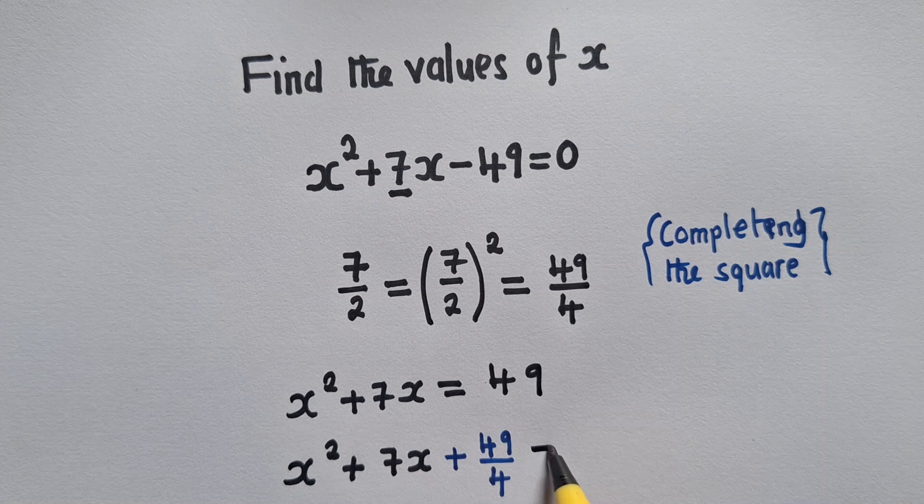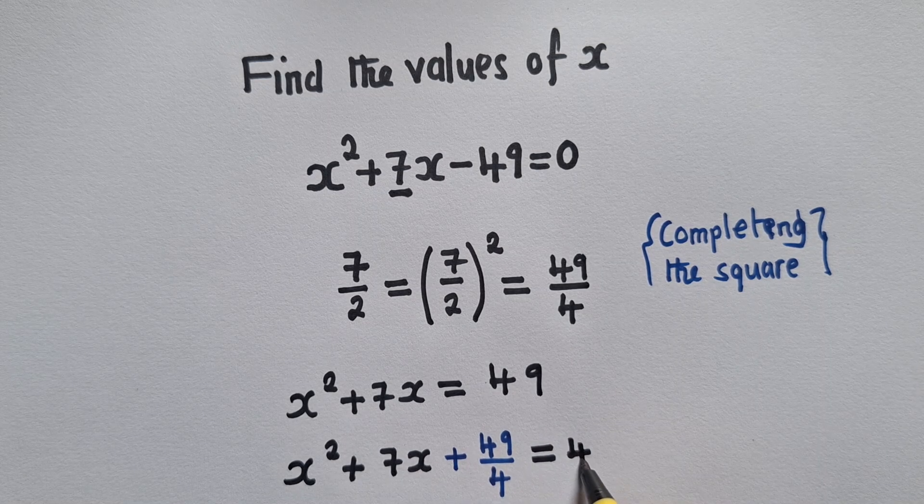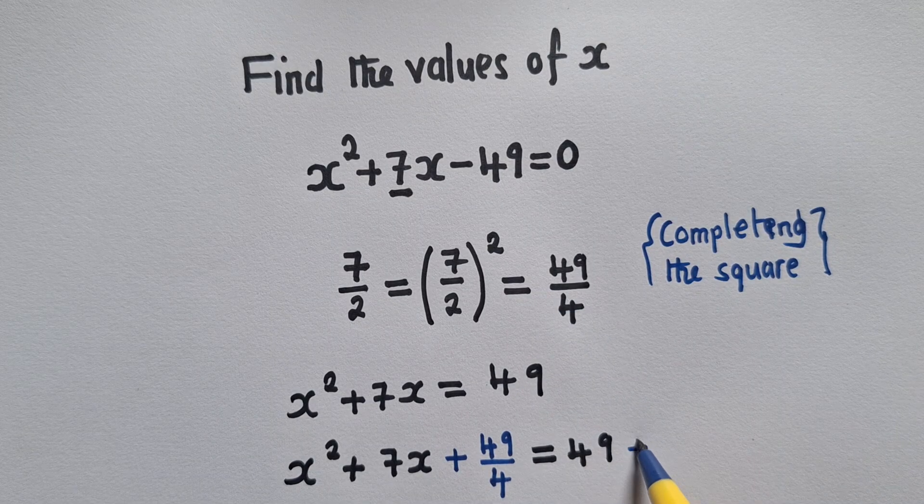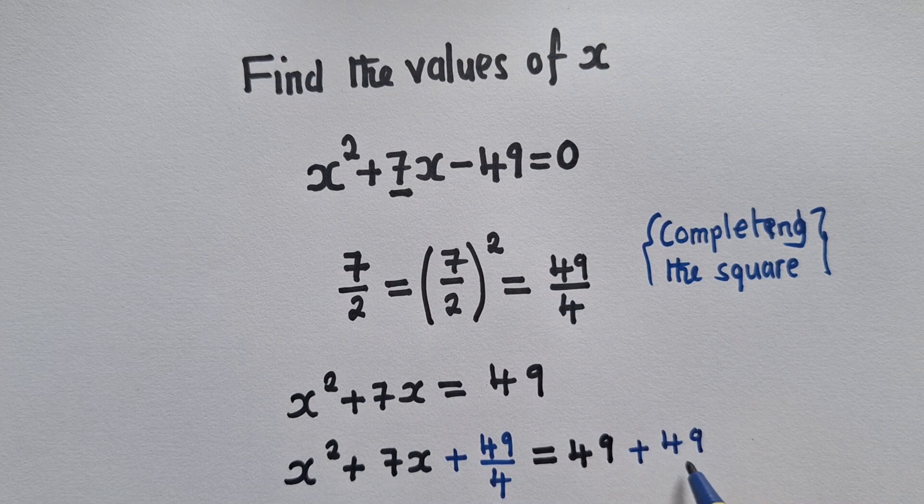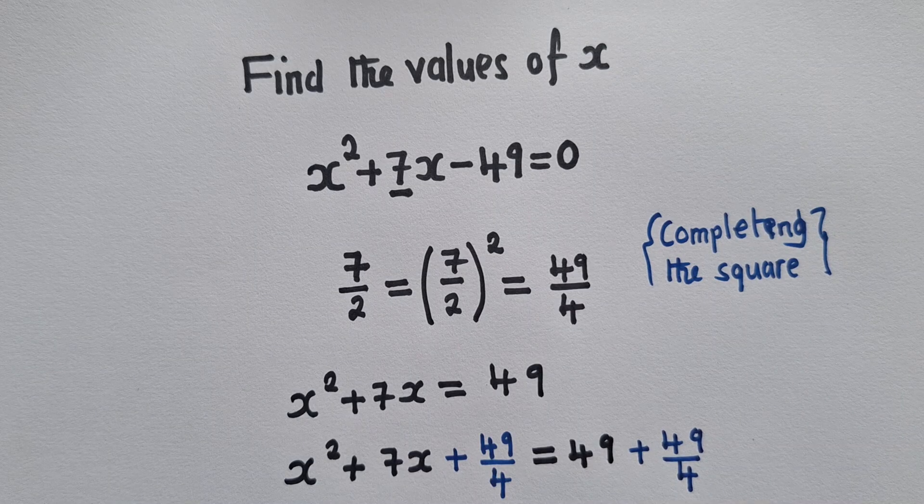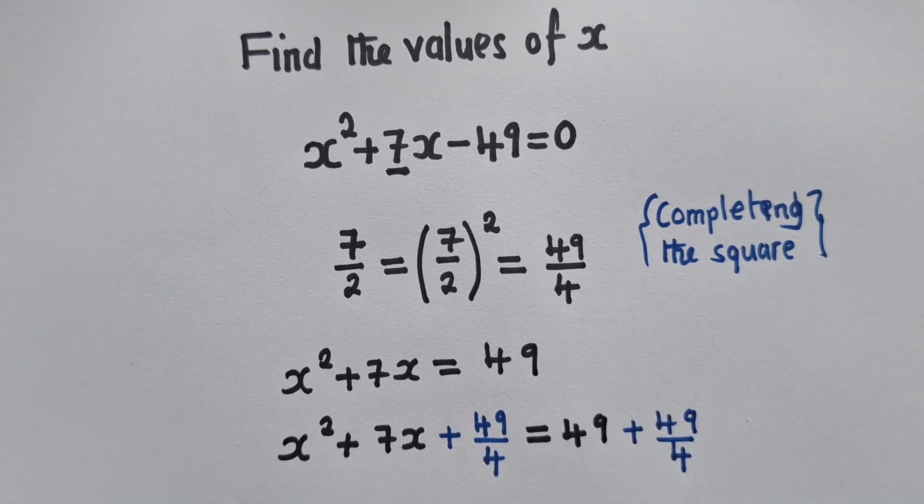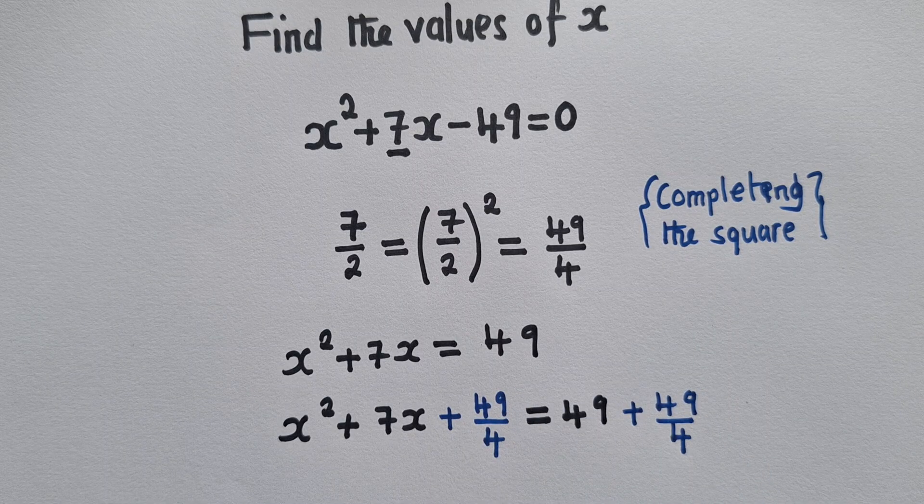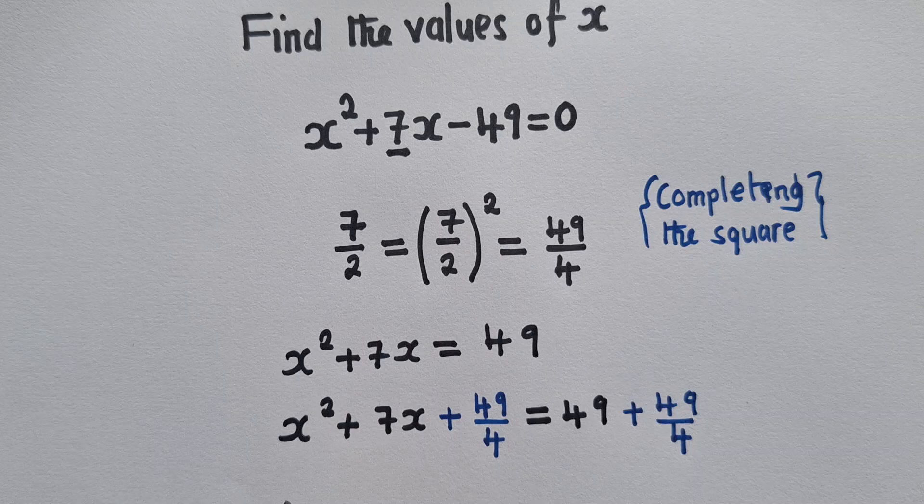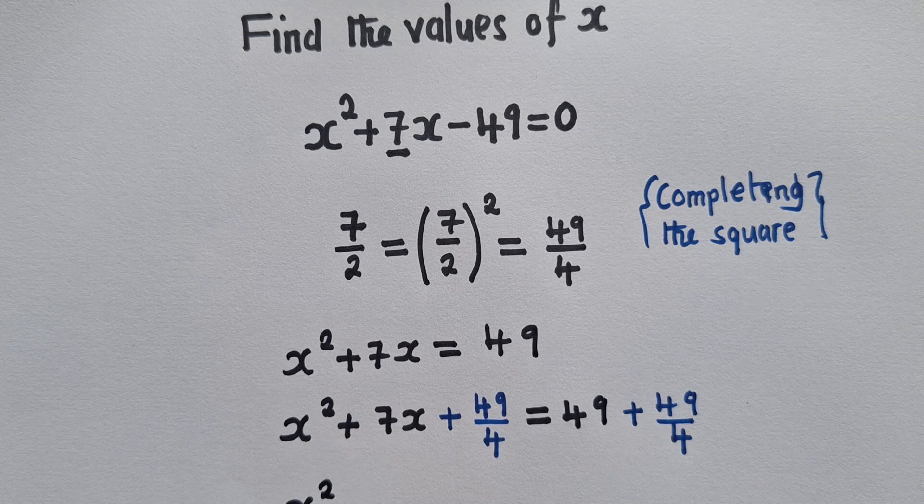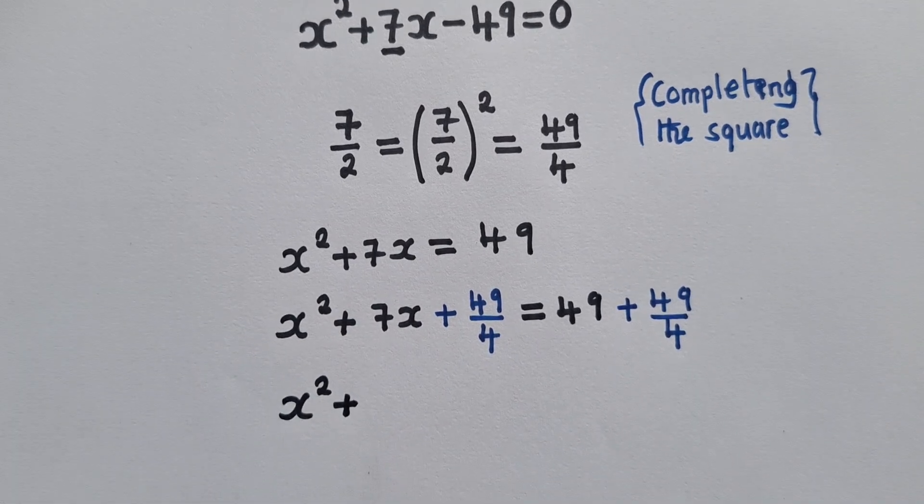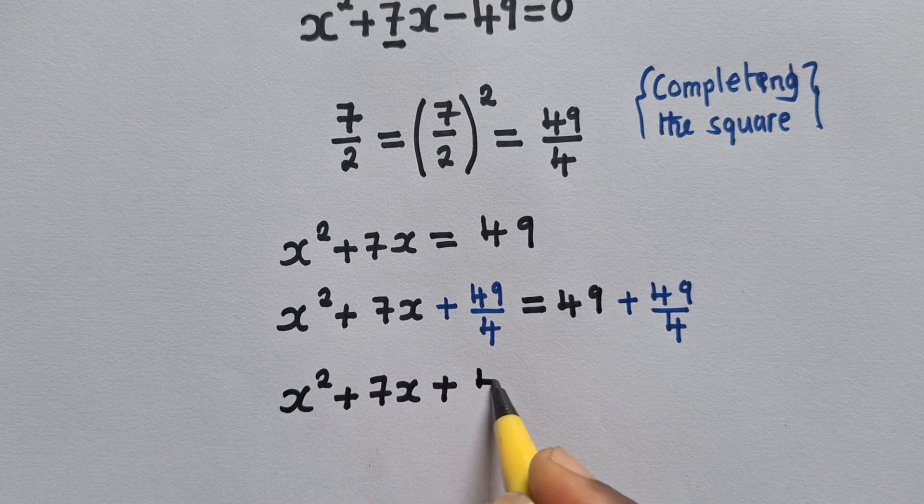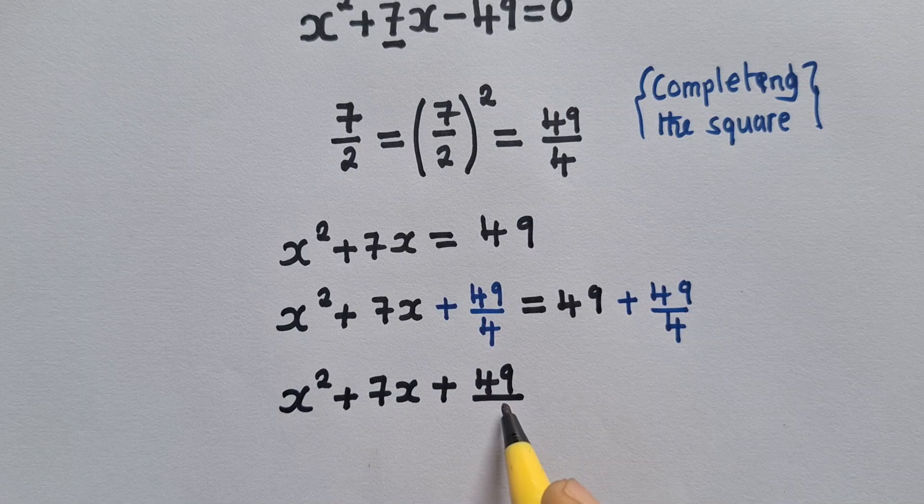Once you do that, you add what you've got right here to both sides. Have you seen? I've added it to both sides of the equation: 49/4, 49/4. And when we simplify here, we're getting x² plus 7x plus 49/4.